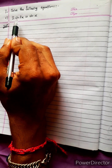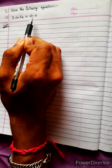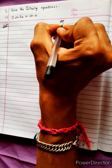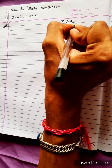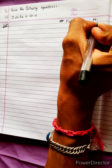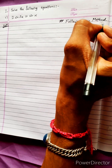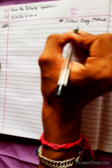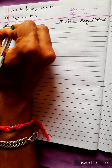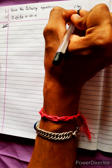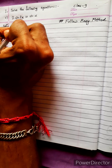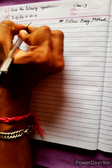Solve the following equation: 2sin2x equal to sinx. The formula for sin2x is 2sinx·cosx, so substituting, 2sin2x becomes 2sinx·cosx.